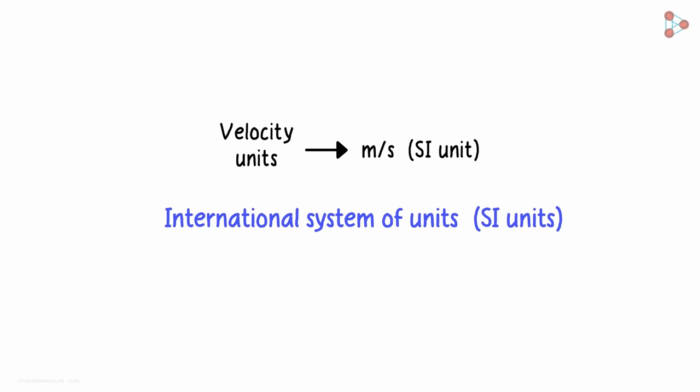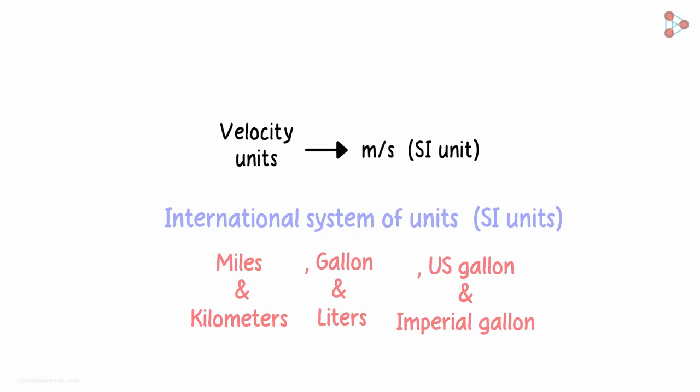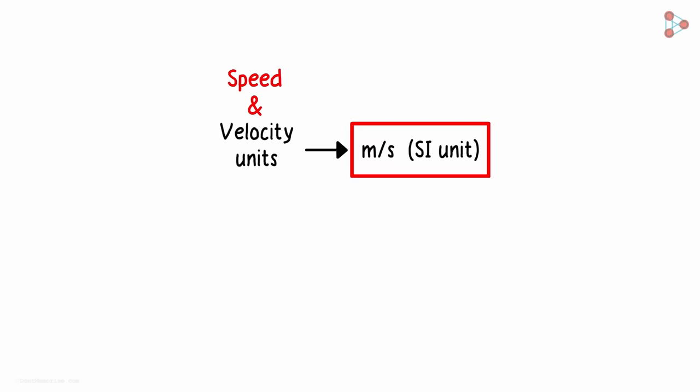Imagine the confusion created with different measures like miles and kilometers, gallons and liters, US gallons and imperial gallons, etc. Incidentally, speed and velocity are both measured in meters per second.